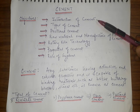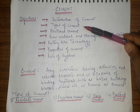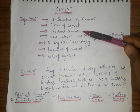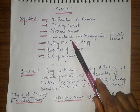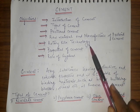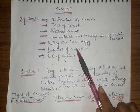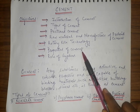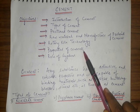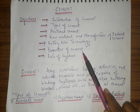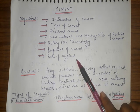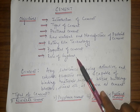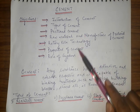The objectives of this study include an introduction to cement — what cement is and what its components are. Based on the components, we will discuss types of cement. Finally, we will study Portland cement in detail, covering its raw materials, manufacturing method using the rotary kiln, properties, chemical reactions when mixed with water, and the role of gypsum.